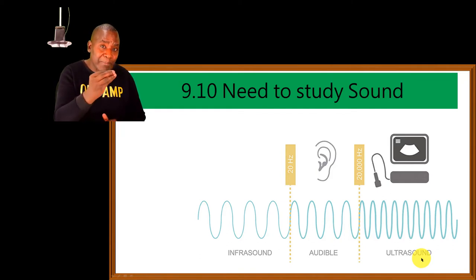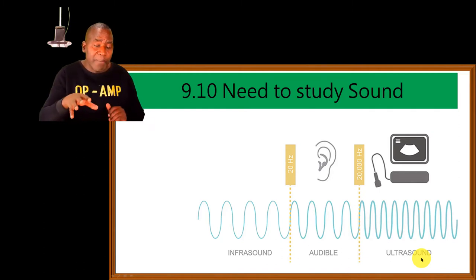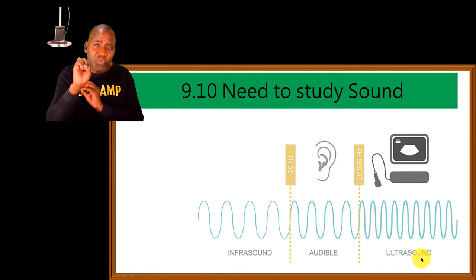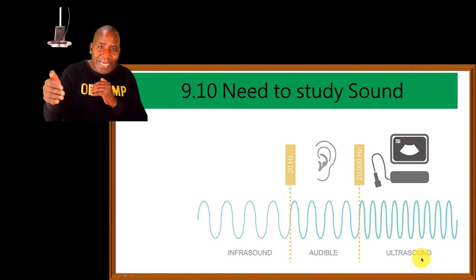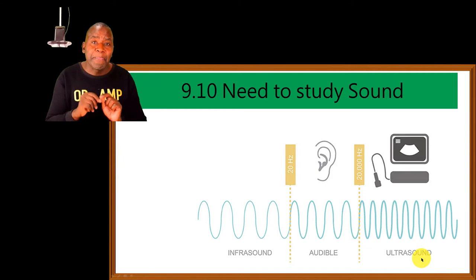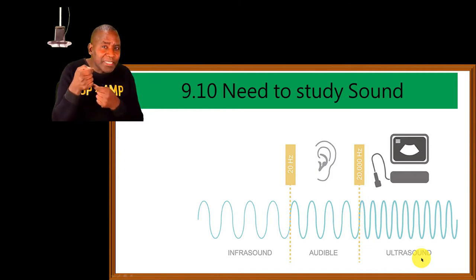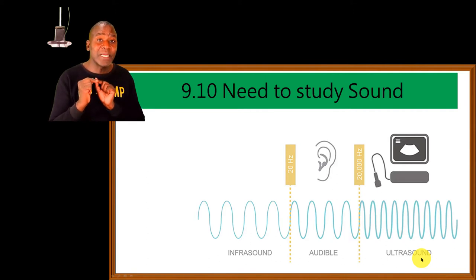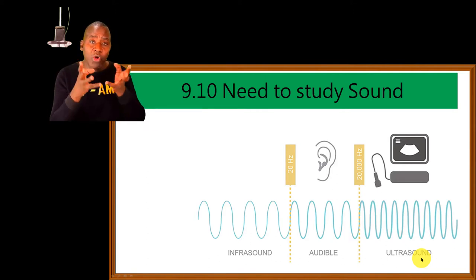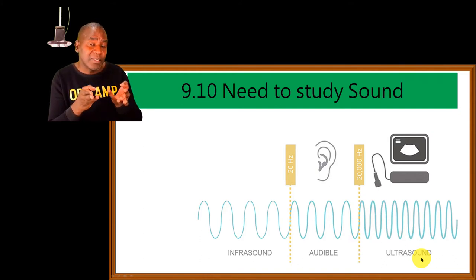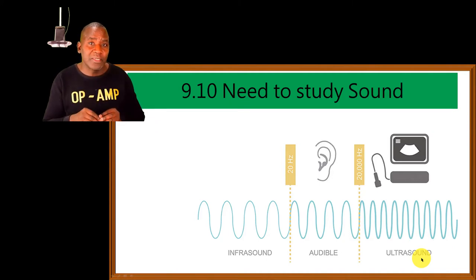One such animal is the bat. It navigates its way around by producing ultrasounds, sending them in various directions. When those waves hit an object, they are reflected — reflection being one property of sound we are going to study. When the bat detects those reflected sounds, it's able to calculate the distance between itself and the object. It can even detect whether the object is something it can eat, like an insect, and then pursue it.